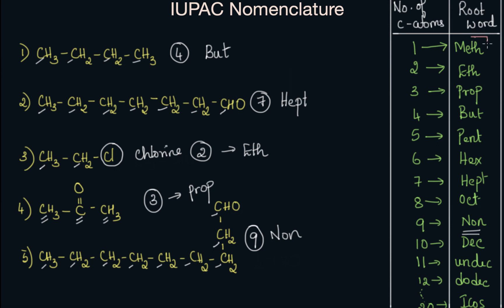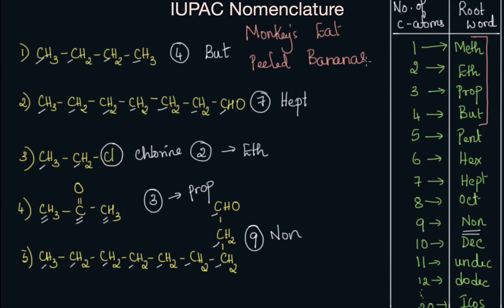One last thing I want to tell you is how to remember the first four root words. You might have heard pent and hex in your earlier classes, but meth, eth, prop, and but are new. You can remember them with a simple mnemonic: monkeys eat peeled bananas. If you remember this mnemonic, take the first letter of each word — M is meth, E is eth, P is prop, B is but. So monkeys eat peeled bananas helps you recall these root words.